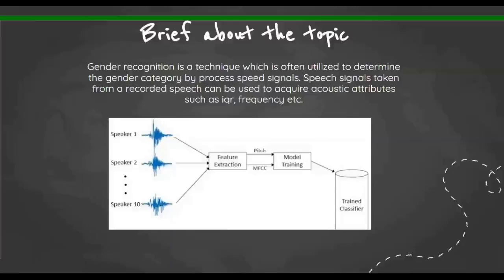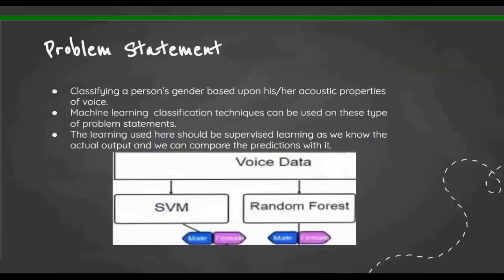Here you can see a small prototype of the whole procedure. The speakers are speaking and then the pitch is recognized by the system, the model is trained, and it is passed through the classifier. The problem statement is: I'm classifying a person's gender based upon his or her acoustic properties of voice, and I've used machine learning classification techniques.